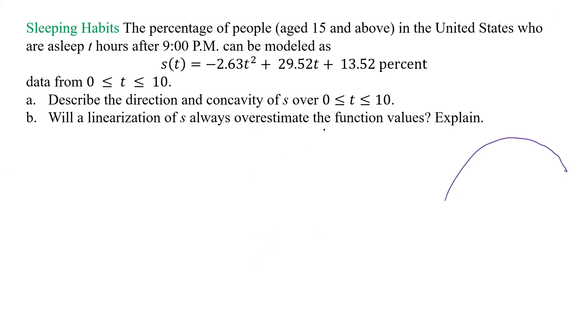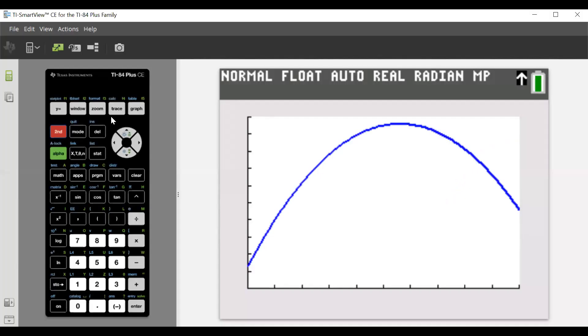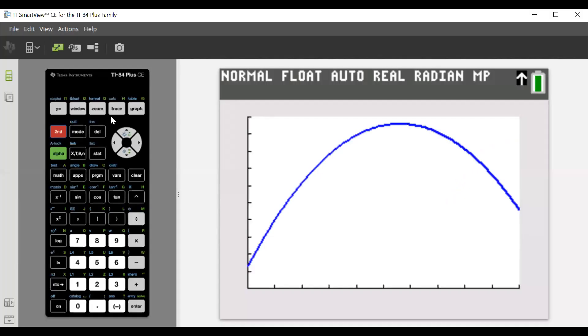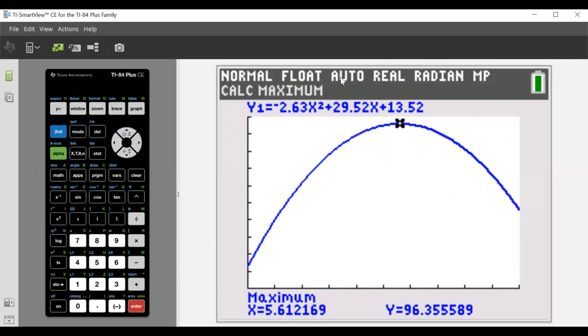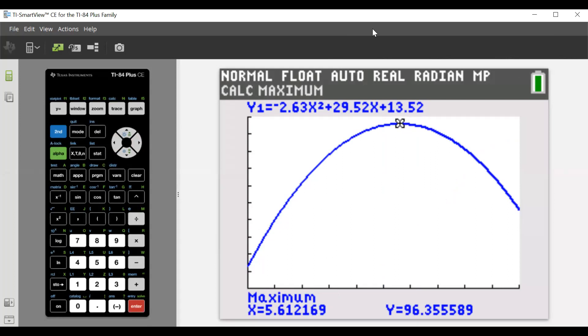So that's what it is. So direction and concavity. Well, the concavity is concave down. But what do we have? We have a change of direction here, so we actually need to find that change of direction. So let's go back, and what we'll do is we'll find the max.